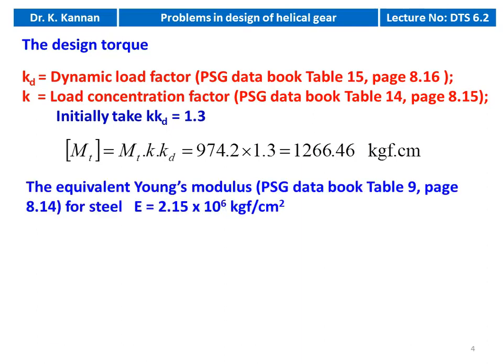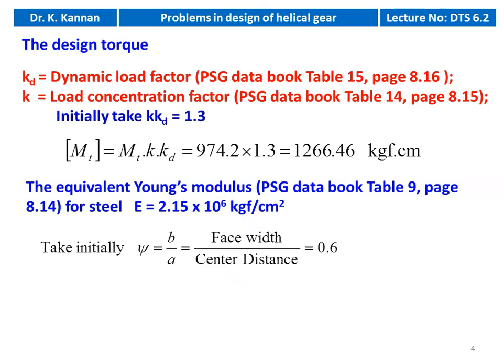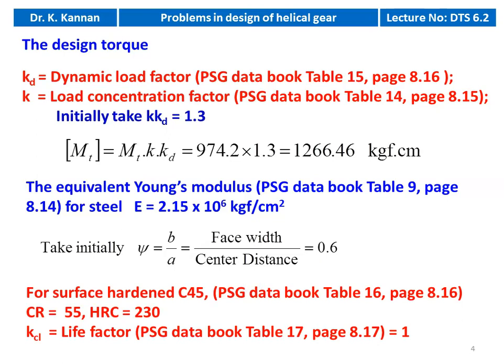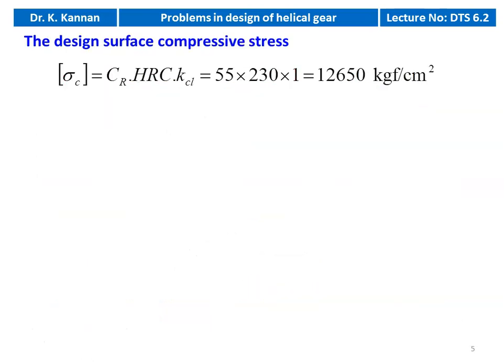The equivalent Young's modulus from table 5 to 9, page 8.14, for steel is 2.15 × 10⁶ kg/cm². We take ψ = b/a = 0.6 initially. For surface hardened C45, from table 16, page 8.16, Cr = 55, HRC = 230, and life factor KCL = 1. Design surface compressive stress σC = Cr × HRC × KCL = 55 × 230 = 12650 kg/cm².